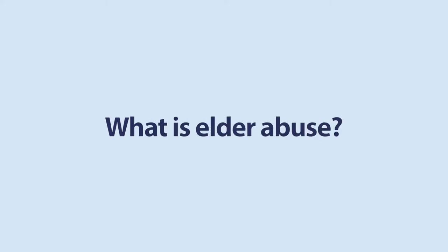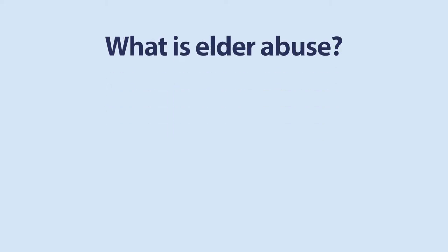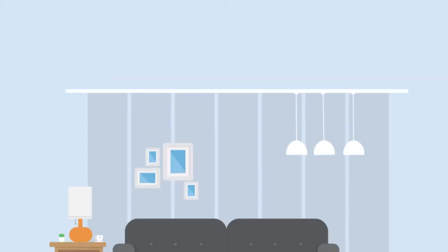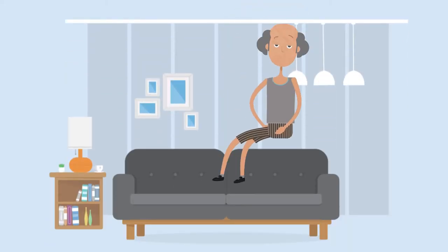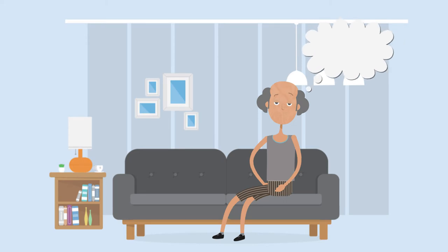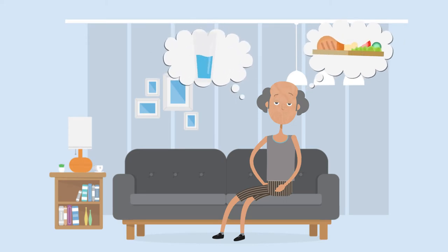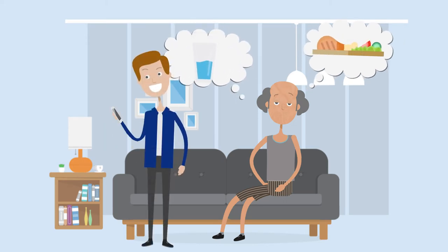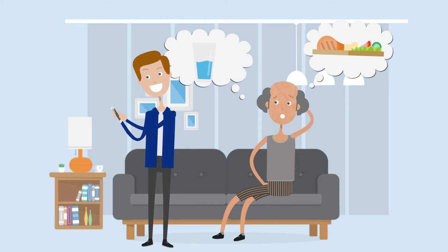What is elder abuse? Elder abuse is a single or repeated act or lack of appropriate action occurring within any relationship where there is an expectation of trust, which causes harm or distress to an older person.